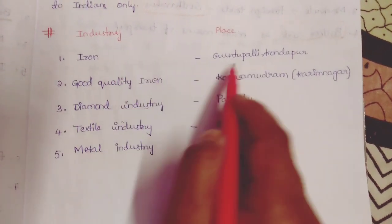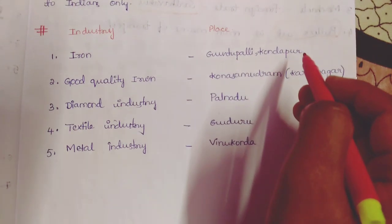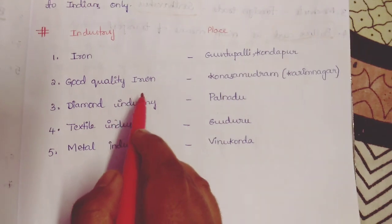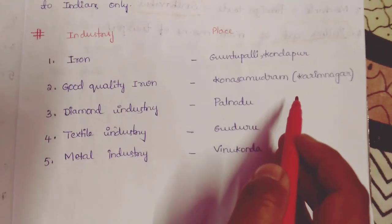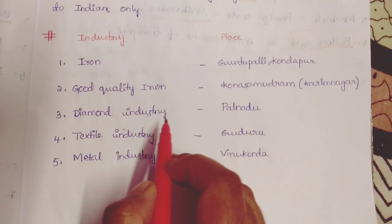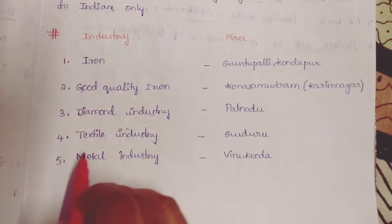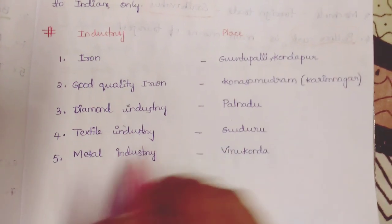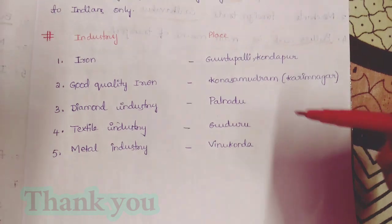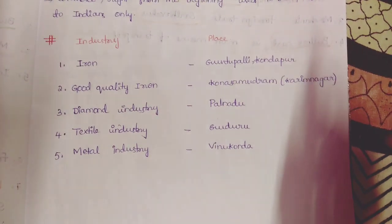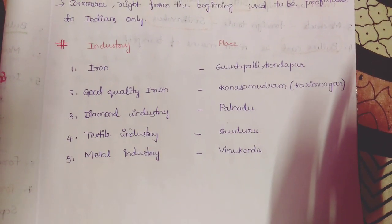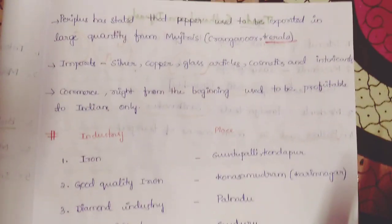Iron industry is present at Guntupalli and Kondapur. Good quality iron is present in Karimnagar district at Kona Samudram. Diamond industry is present in Pallnadu. Textile industry is at Guduru and the metal industry is at Vinukunda. That's it for this video. I'll continue about the Satavahana dynasty in the next videos and very soon will start about the Ikshvaku dynasty.